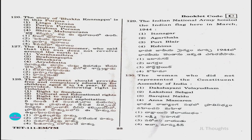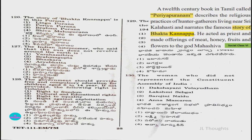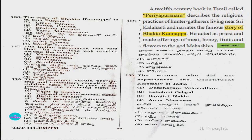Question number 126: The story of Bhakta Kannapa is in which Purana? Options: Lingapurana, Periyapurana, Brahmapurana, Shiva Mahapurana. In the social textbook class 6, it is mentioned that the 12th-century Tamil book called Periyapurana narrates the famous story of Bhakta Kannapa. So the answer is option two, Periyapurana.